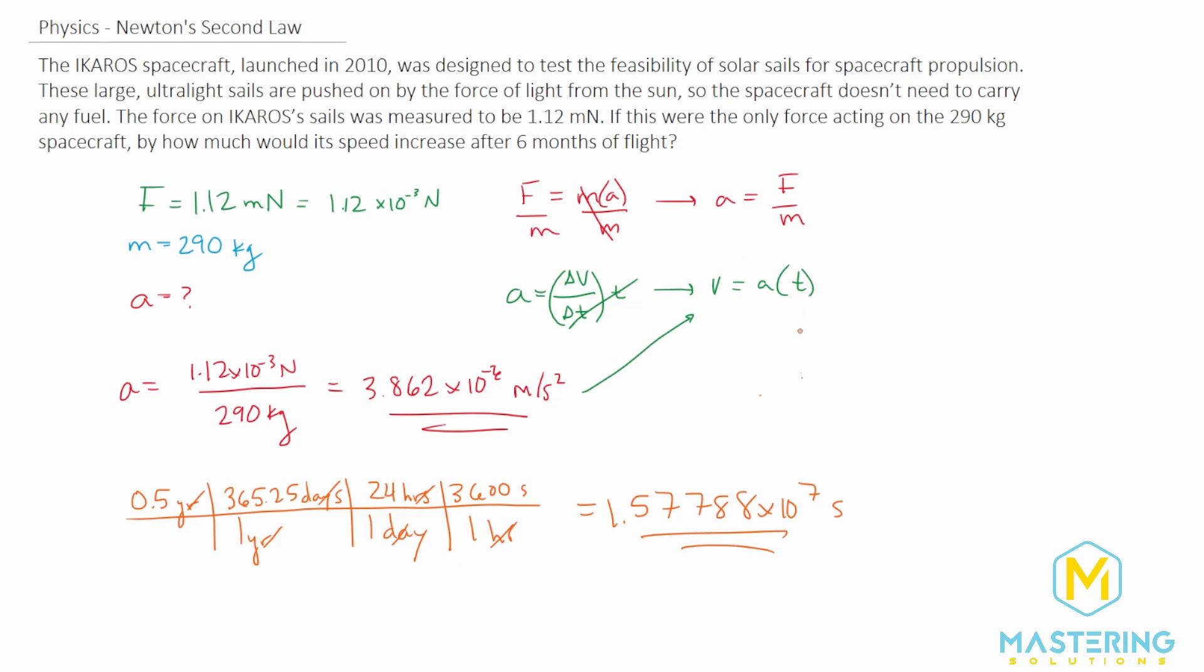So now we can plug this in. The velocity is going to be equal to this acceleration—1.57788 times 10 to the 7 seconds—oops, that is the time. So we have the time here multiplied by this as the acceleration: 3.8 times 10 to the negative 7 meters per second squared.